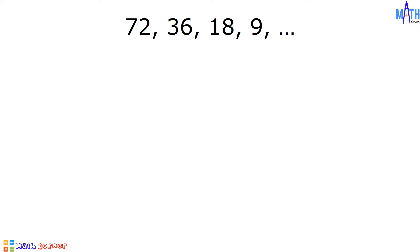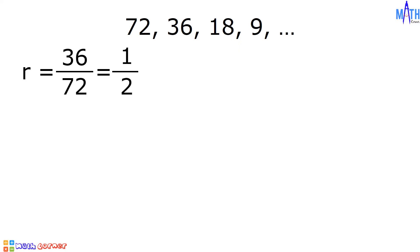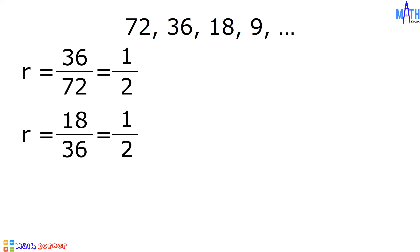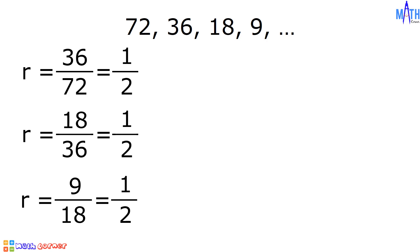Let us check for the ratio. 36 divided by 72 is equal to 1 half. 18 divided by 36 is also equal to 1 half. 9 divided by 18 is also equal to 1 half. There is a common ratio; therefore, 72, 36, 18, 9, and so on is an example of a geometric sequence.